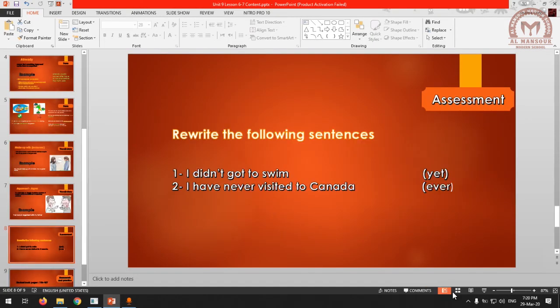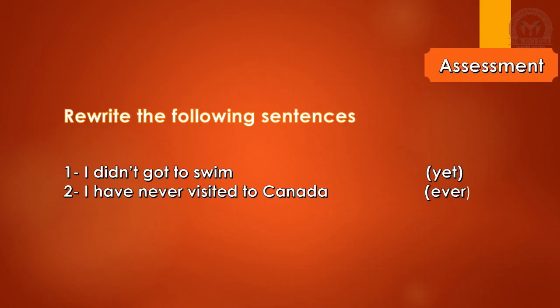What did we learn today? We remembered the present perfect. We learned how to use it with yet. We learned about ever and never. We also learned some new vocabulary and what kind of situations and problems we can deal with. Here's your assessment question: I want you to rewrite the following sentence - I didn't go to swim and I have never visited Canada. There is no to here, it's I have never visited Canada. You can correct that.